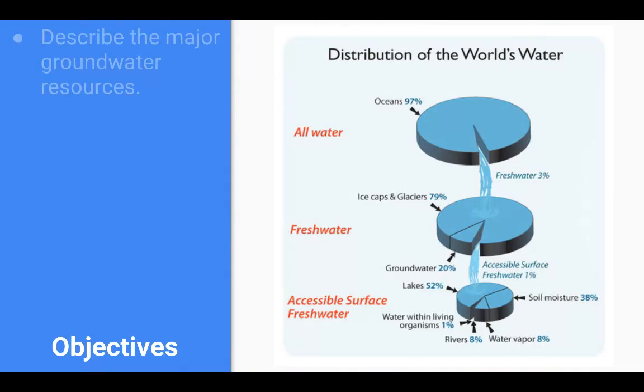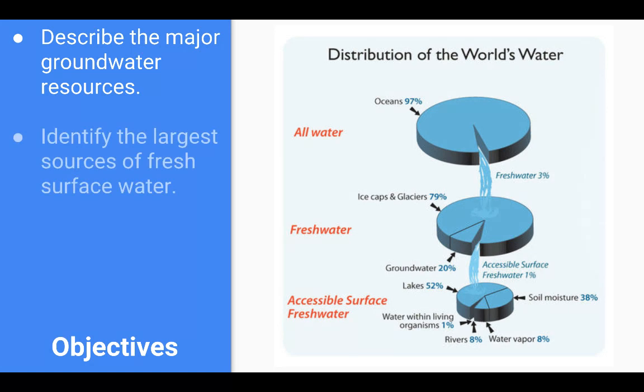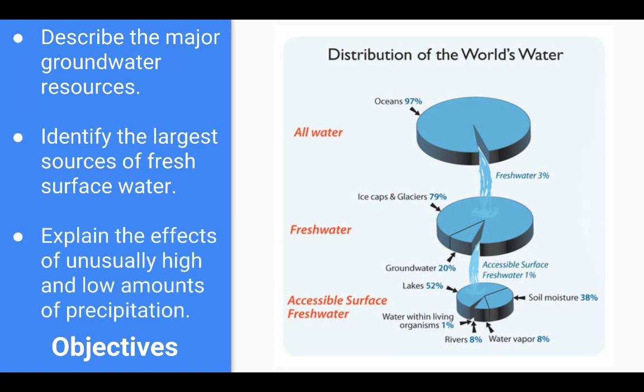What we're going to look at today: the major resources in regards to groundwater and the features we'll see with it. We'll talk about the largest sources of fresh and surface water, and then we're going to look at what happens when you have unusually high or unusually low amounts of precipitation — in regards to flooding and drought.